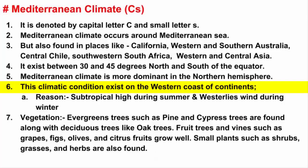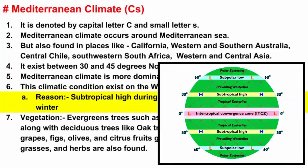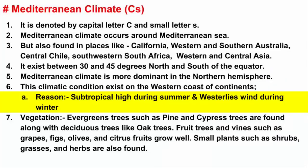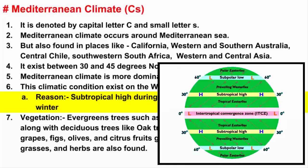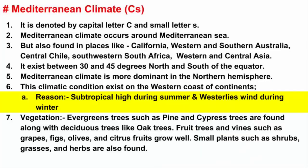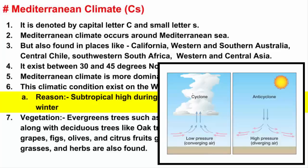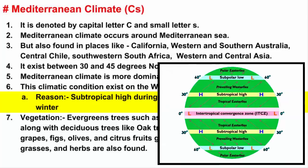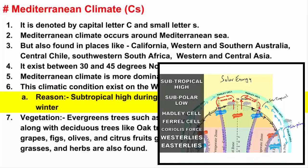Now let's see why the Mediterranean climate exists on the western coast of continents. During summer, this happens because of the subtropical high, which is basically a high pressure belt that exists in the subtropical region. During winter, it's because of westerly winds. The subtropical high is a high pressure belt, which means it contains cool and dry air, because high pressure is associated with cool and dry air that sinks. Subtropical high exists around 30 degrees north in the Northern Hemisphere and 30 degrees south in the Southern Hemisphere. I have a video on subtropical high — I'll put the link in the description.